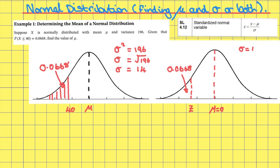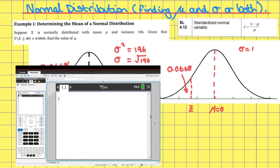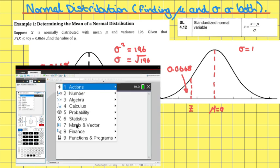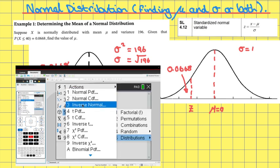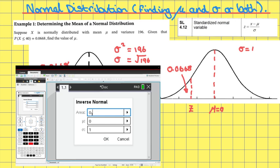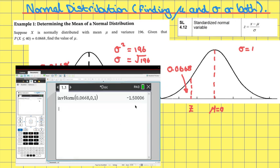I can find this z-score on my TI-Nspire by doing an inverse normal distribution for a standardized normal distribution curve. I've opened my TI-Nspire to a calculator page. I go to Menu, then Probability, then Probability Distributions, and select Inverse Normal. I know that the area is 0.0668, and since it's a standardized normal distribution, mu is zero and sigma is one. Pressing OK gives me a value of minus 1.5, so z is equal to minus 1.5.